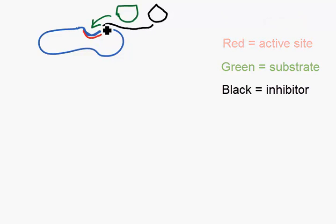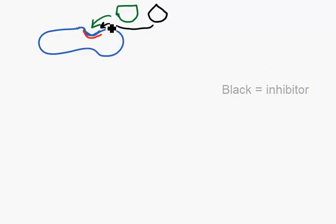These two are fighting, or competing, to fit into the active site. If you have a mixture of substrate and inhibitor, it will slow down the reaction where the inhibitor occupies the active site.